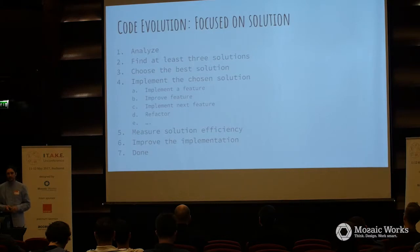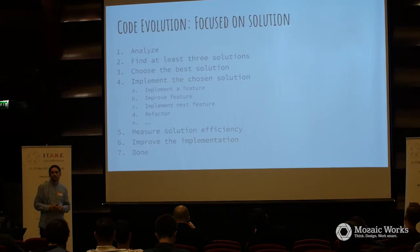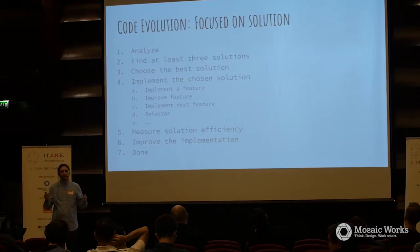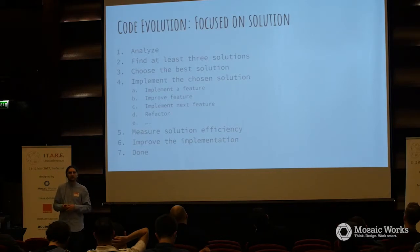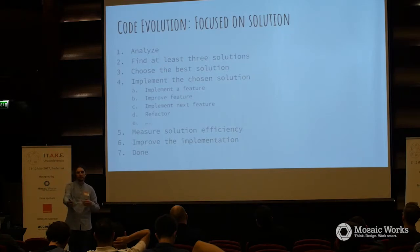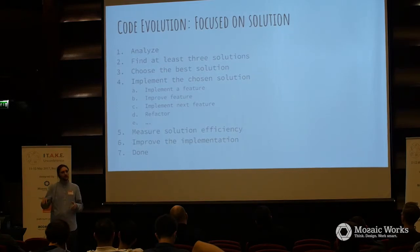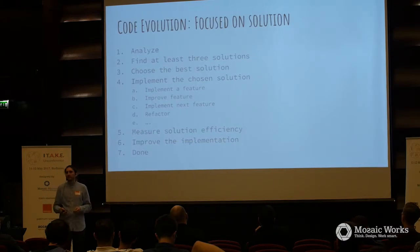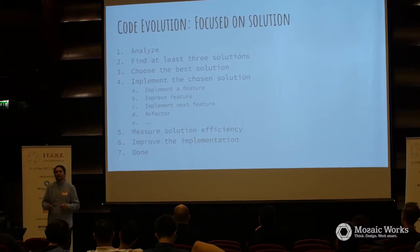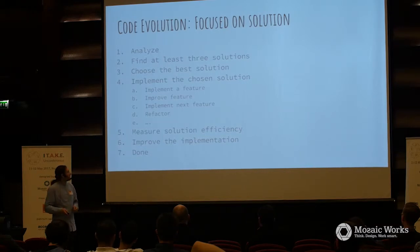Code evolution focused on the solution: you have the big problem, make an analysis, do the architecture, then do the design, and then some people write the code and say the architecture is bad, the design is bad. But we cannot change it because it's in the documentation and the customer agreed on that. Sometimes you also measure efficiency and make hacks or changes.